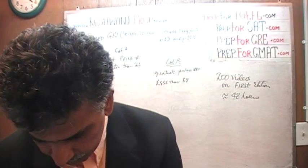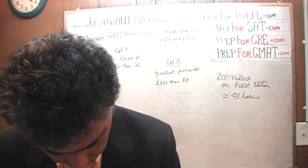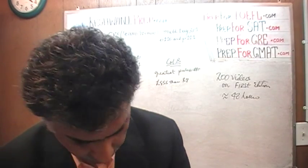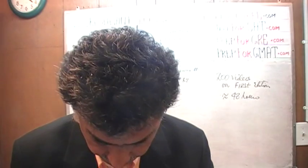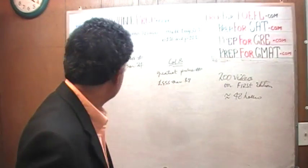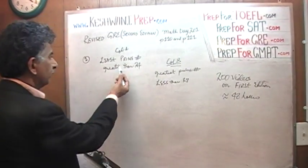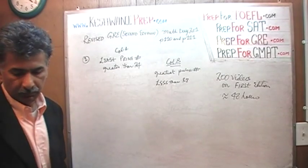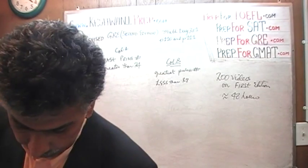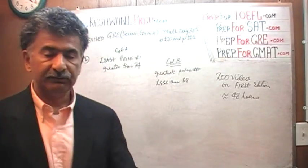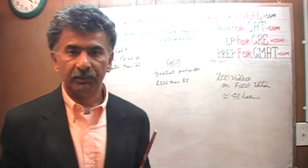Let's turn to page number 111. On page 111, the very first problem that we see there, they are asking us to compare the least prime number greater than 24. Because it is a prime number, by definition, it has to be an odd number.